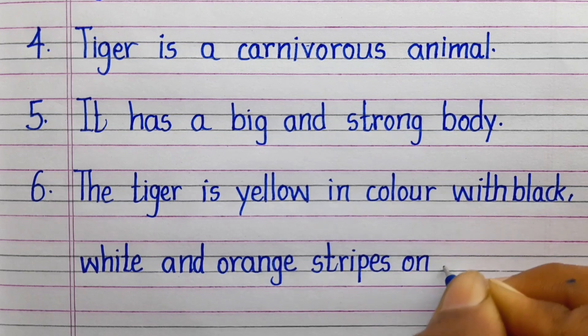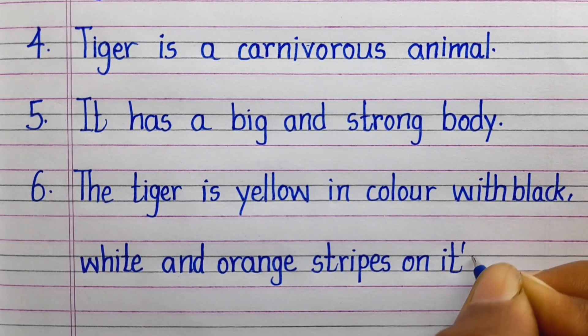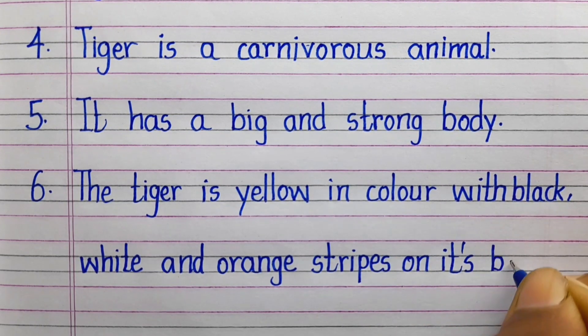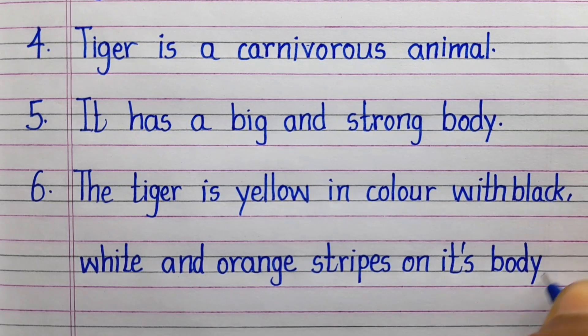Sixth line: The tiger is yellow in color with black, white and orange strips on its body.